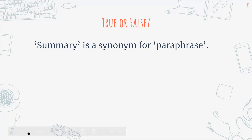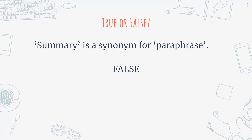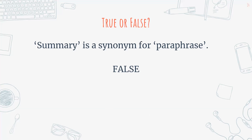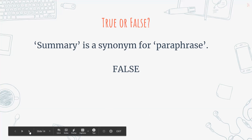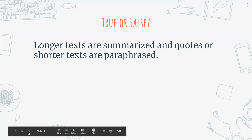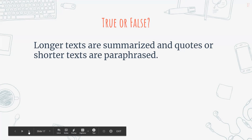Now, just to review — true or false? A summary is a synonym for paraphrase. Is summary and paraphrase the same thing? I hope you said false. The answer is false. Summary and paraphrase do not mean the same thing. A summary makes your information more concise, while a paraphrase is a representation of what was written in the original text done in your own words. Both should be written in your own words, but summaries are very concise. True or false: summaries must be written in your own words? I hope you said true — summaries must be written in your own words. Longer texts are summarized and quotes or shorter texts are paraphrased — true or false? The answer is true.